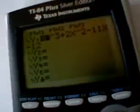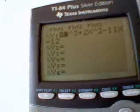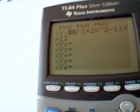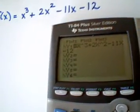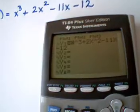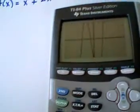And then, of course, what I did is I typed that function by hitting y equals, and I typed that in, x caret 3 plus 2x caret 2 minus 11x minus 12. When I hit graph, okay,